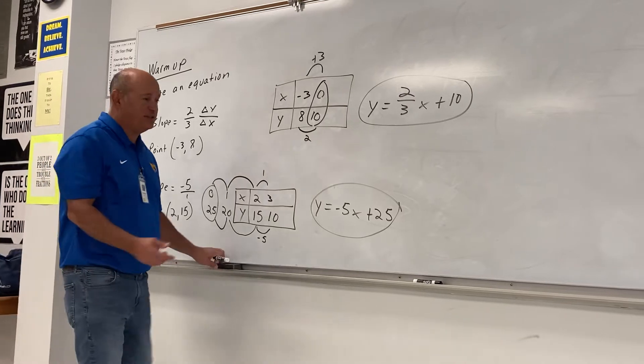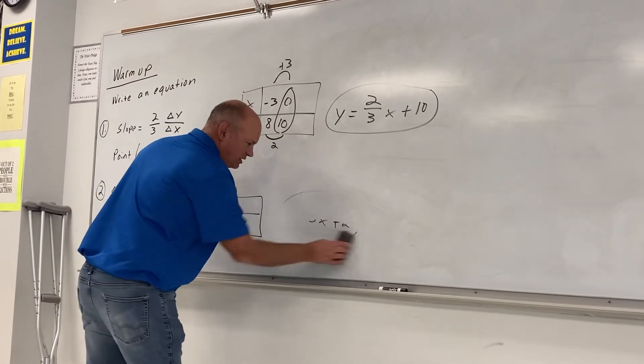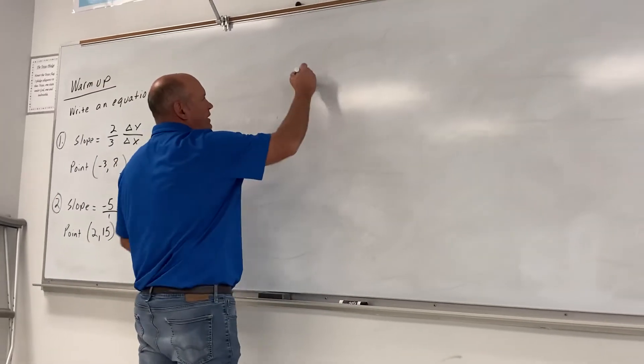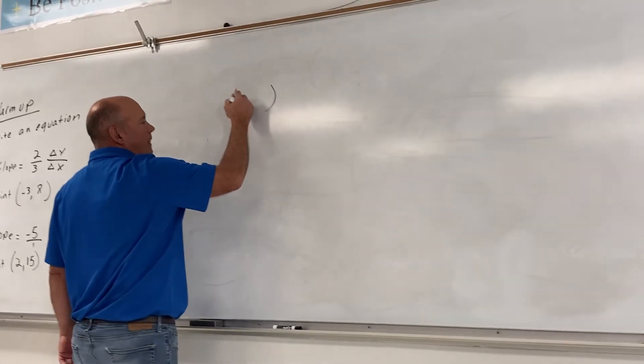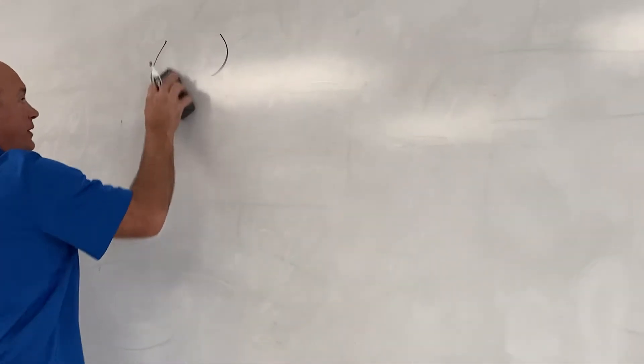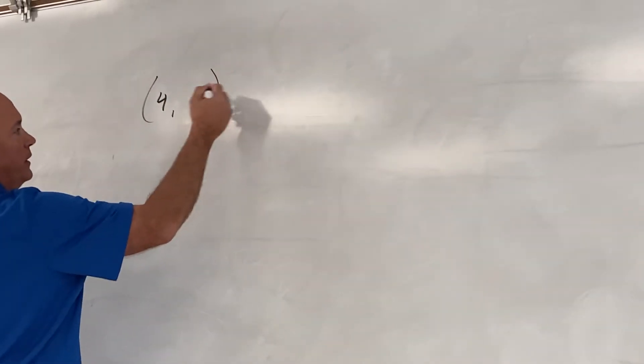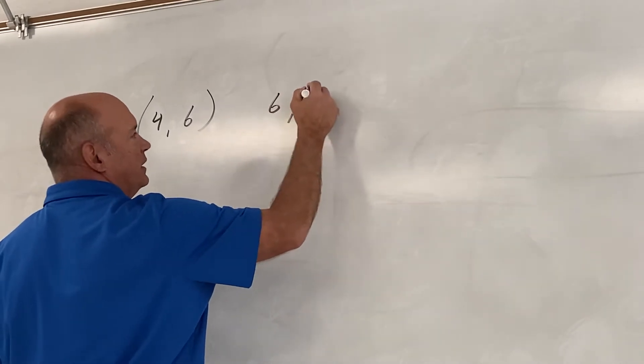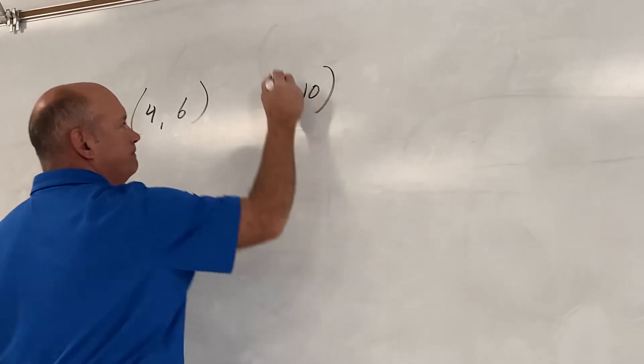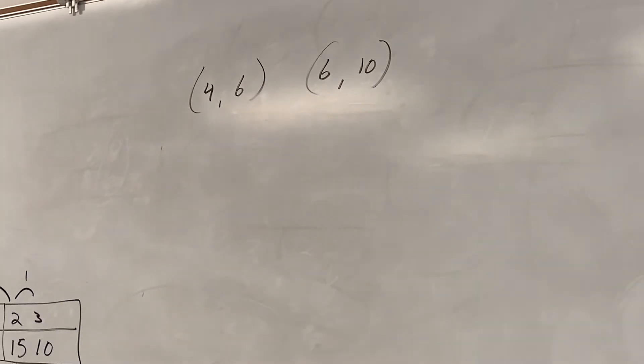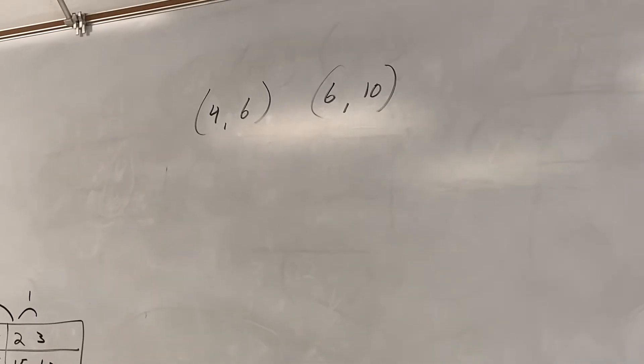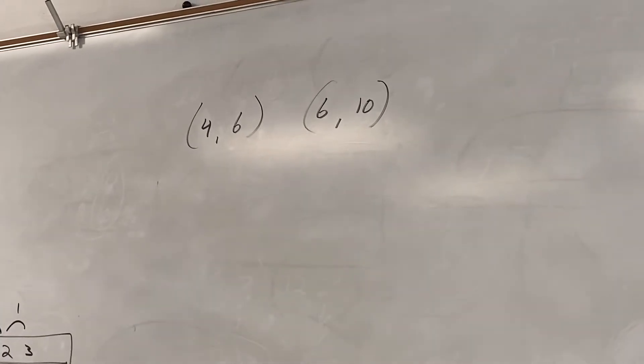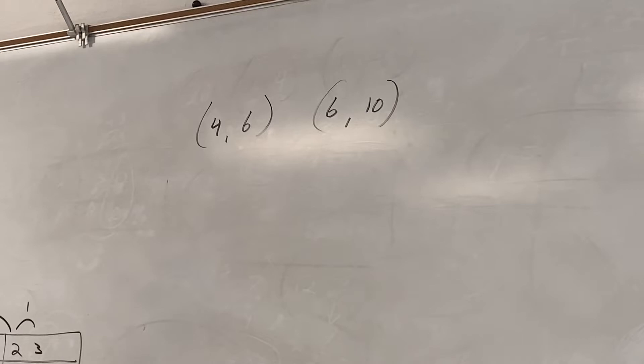Now, I'm going to make it a little more challenging. What if I do this? I just give you two points. Let's use 4, 6, and 6, 10. What if they don't give me the slope? They just give me two points. What do you think we might want to do, Perla? Perla's like, we could do y2 minus y1 over x2 minus x1. Yes. But I don't want to do that, Perla. I'm going to be a rebel.